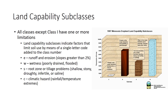A class 6E soil is very limited by erosion hazards. The letter codes are as follows. E: runoff and erosion — lands with slopes greater than 2% are those that need some form of erosion control. W: wetness — these soils may be poorly drained or occasionally flooded; some such soils may be drained, others are classified as wetlands that are best left as is. S: root zone or tillage problems — these soils are shallow, stony, droughty, infertile, or saline; wind and water erosion may be problems. C: climatic hazard — areas of rainfall or temperature extremes make farming difficult; examples include deserts or the far north.